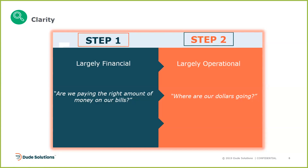Question number one: are we paying the right amount of money on our bills? This is largely financial — things that can be done through rate audits with your utility providers, billing audits with the accounting team, sometimes in a spreadsheet. The idea is holding March 2020 utility invoices in your right hand and March 2019, 2018, 2017 invoices in your left hand and comparing them. We do this at our homes — is this right? Am I paying the right amount of money on this bill?